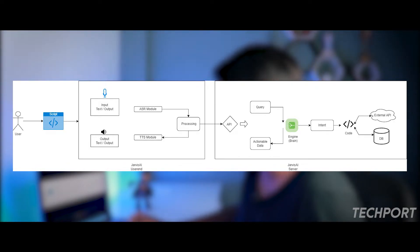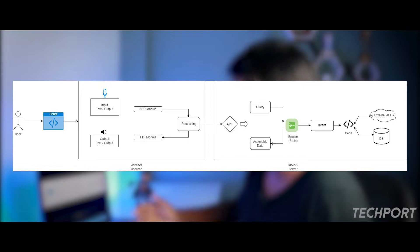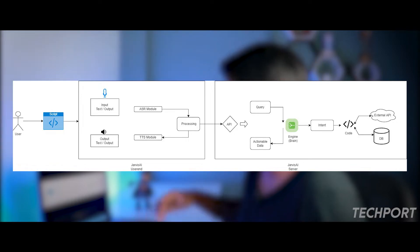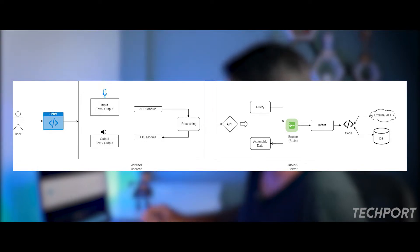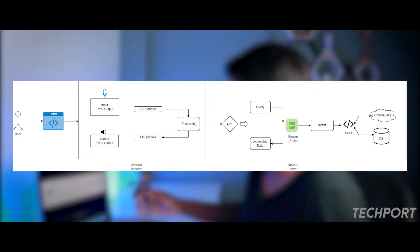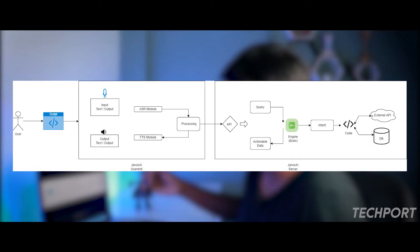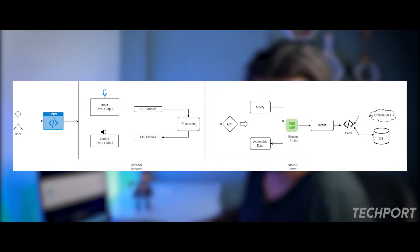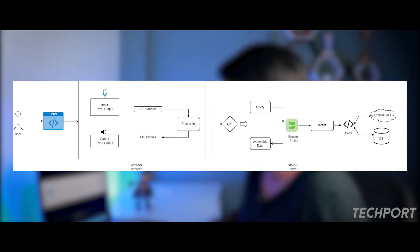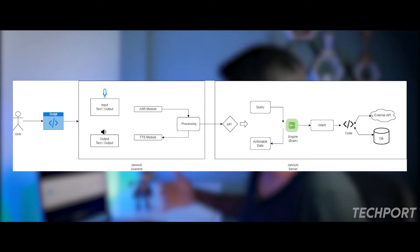On the server, we analyze the query and determine the intent. For example, if you ask 'what is the time', Jarvis AI — the brain — analyzes that the person is asking for the time and needs to respond with the time. Simple queries like time are handled locally in your system, but there are some high-end tasks handled server-side.